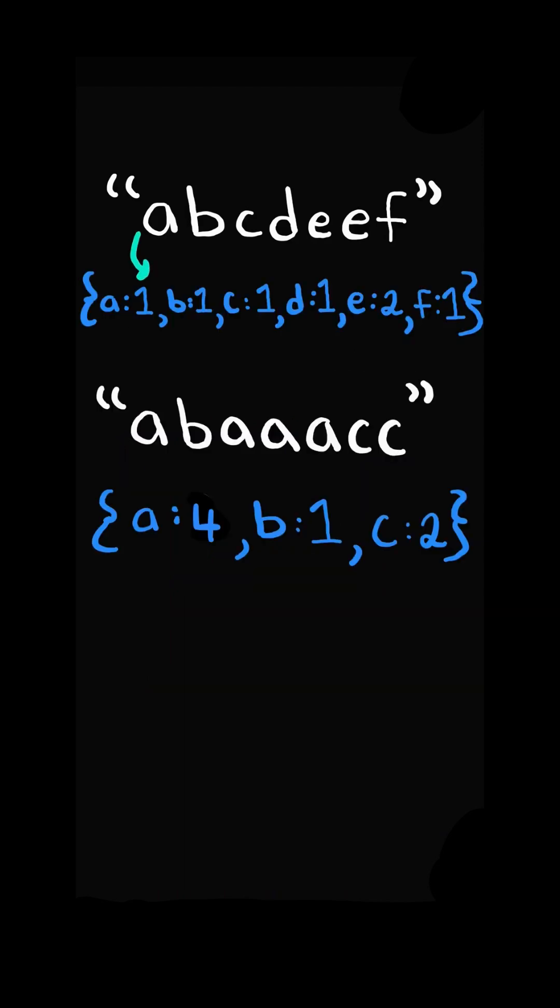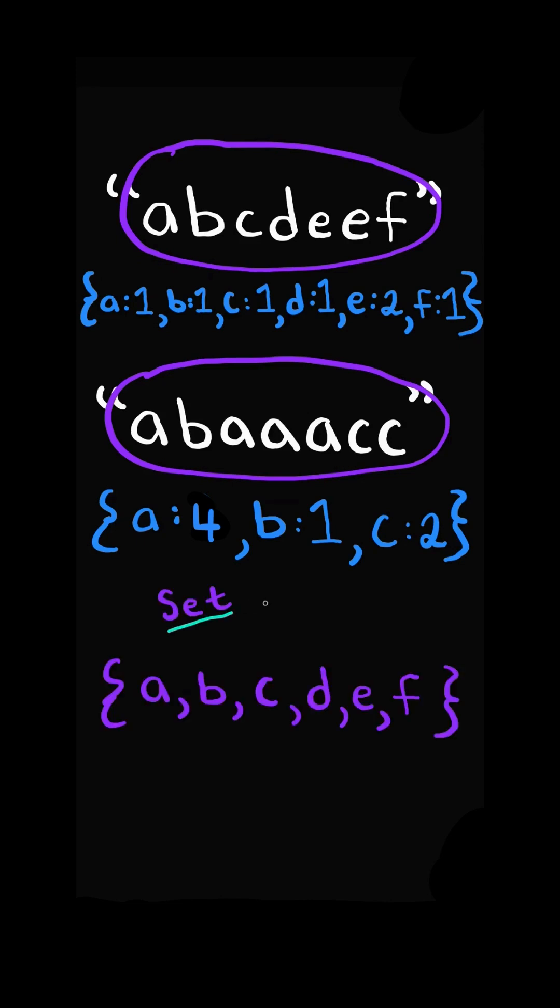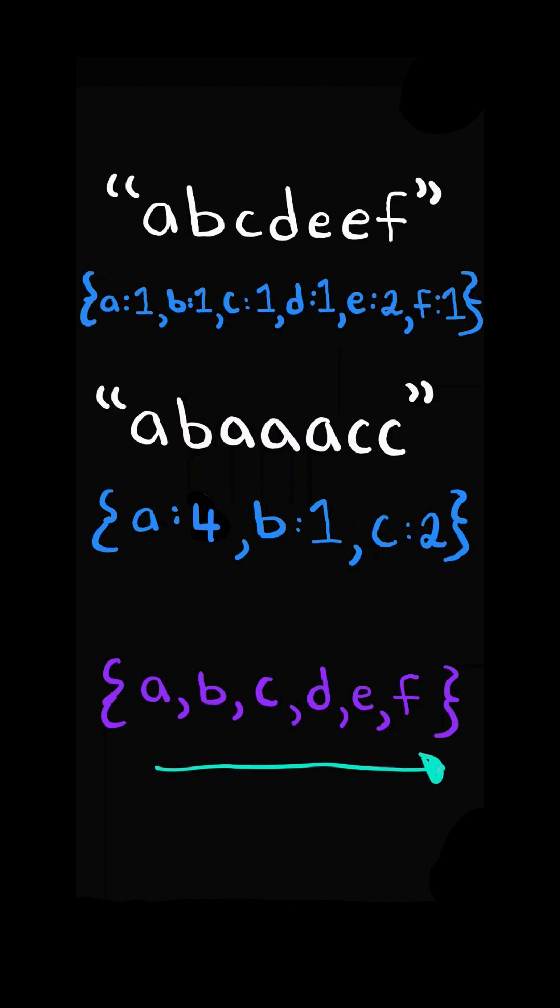First, we will build a frequency hash map of each string. Then we will take both the words and convert it into a set to get the set of unique characters. We will iterate through the set and check the frequency of the characters in the word and make sure the difference is at most 3. And we continue this process.